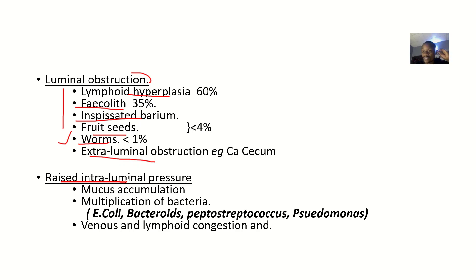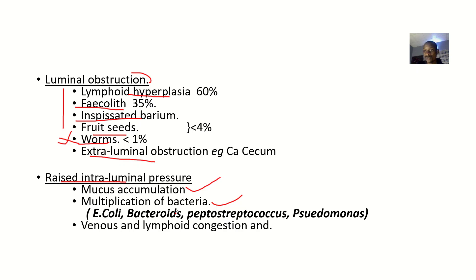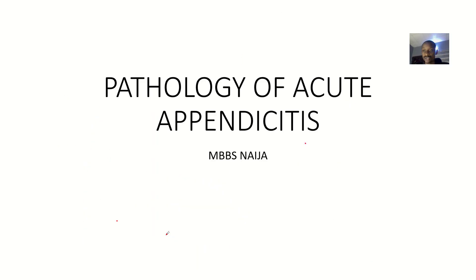The raised intraluminal pressure can be due to the obstruction leading to pus or mucus formation and accumulation. It could also be from bacterial multiplication — organisms like E. coli, Peptostreptococcus, and Pseudomonas growing and causing increased pressure. It can also result from venous and lymphoid congestion. That covers the pathology of acute appendicitis — the step-by-step process of how this condition comes to be.